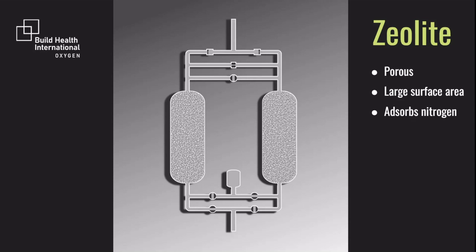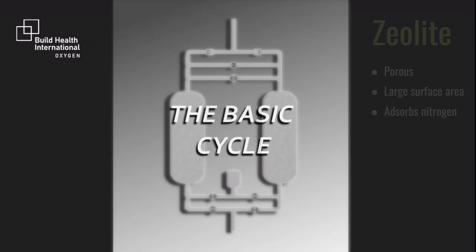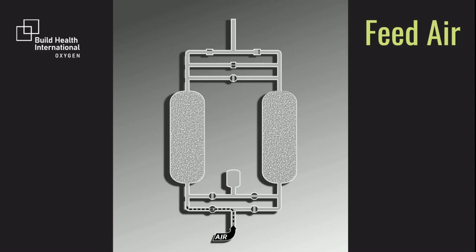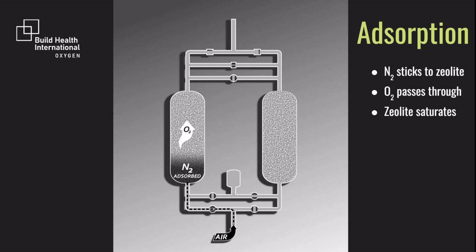Let's see what the adsorption process looks like in just one tank. Here we see air flowing from the inlet pipe through an open valve and into the bottom of the tank. As air passes through the zeolite, the nitrogen molecules stick to the surface of the zeolite. Air is about 78% nitrogen, 21% oxygen, and only 1% other gases. So trapping all of the nitrogen leaves very pure oxygen passing through the zeolite. Zeolite can only trap so much nitrogen, so as air is flowed through the zeolite, it will start to become saturated with nitrogen.